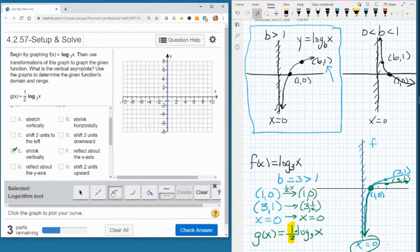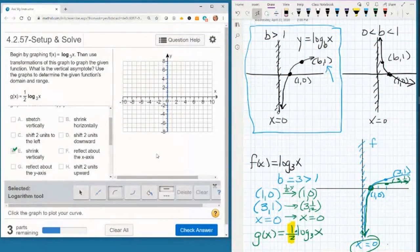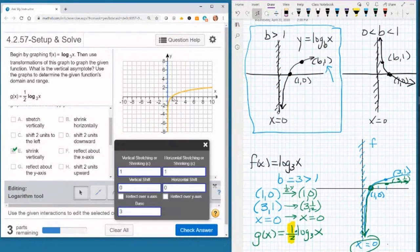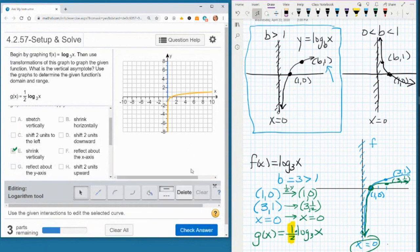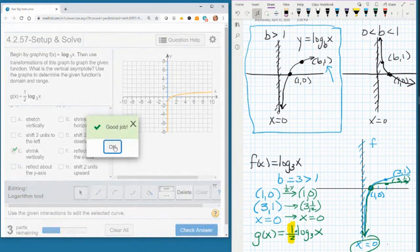So let's go ahead and graph this in MyLabs. So we're going to plot the point. Well, first let's put in the asymptote. Got to put in my line, which is dotted. Then I'm going to note, solid line on the log function. I'm going to put in (1, 0). There we go. So put in a half for vertical shrink and a base of 3, and check answer. And I got it.